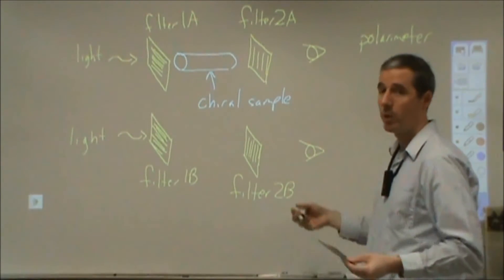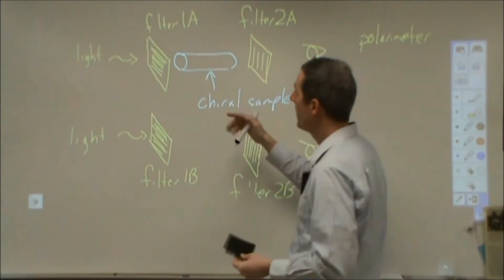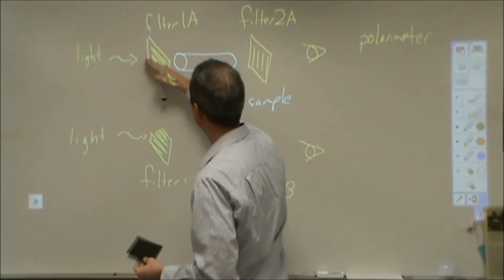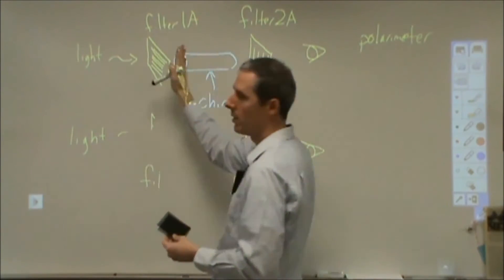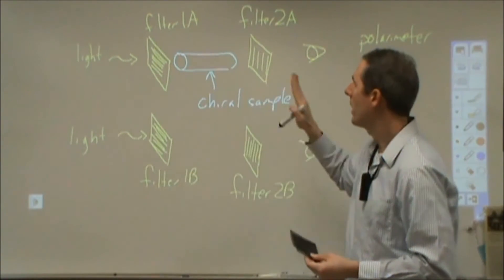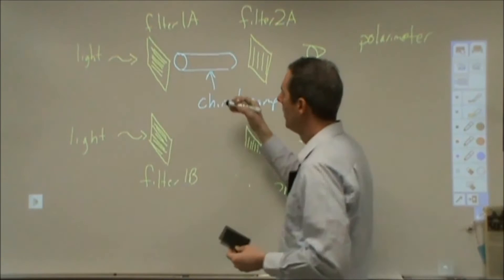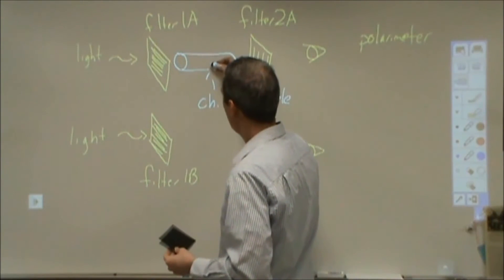So the chiral sample is a sugar solution or something, and what's going to happen is the light that comes through here that has electric fields blocked up and down, but is letting them pass through left to right, or into the board and out of the board, as the way I've drawn it here. That's going to rotate the plane of polarization.